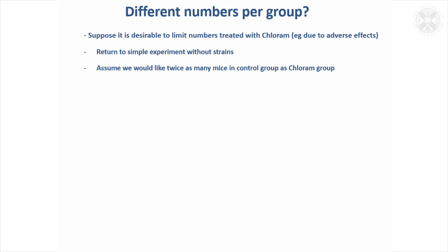Occasionally, there might be benefits in a study to having different numbers per group. For example, if chloram was seen as a treatment that might give nasty adverse effects, there might be a benefit to having a smaller number of animals in the chloram group than the control group.